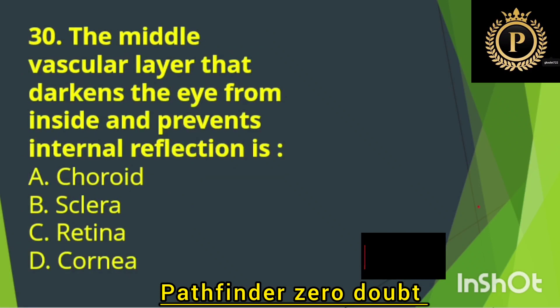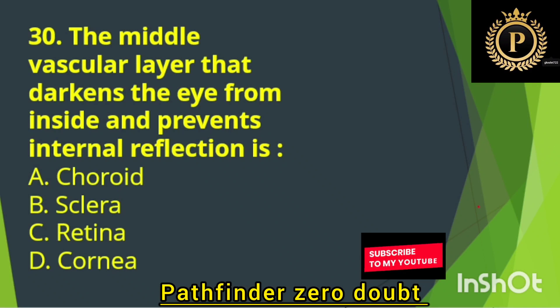The middle vascular layer that darkens the eye from inside and prevents internal reflection is — Option A: Choroid.